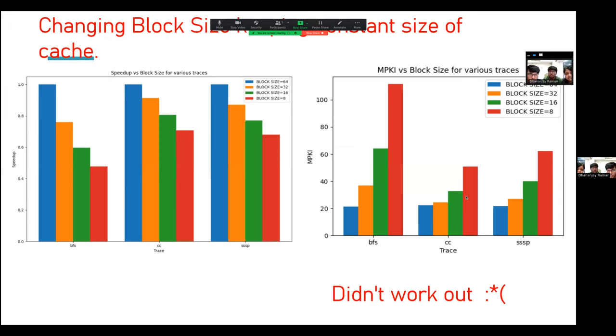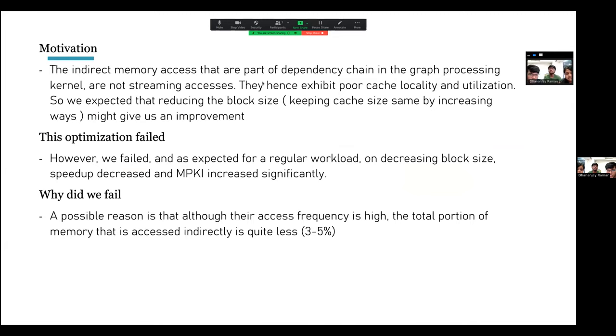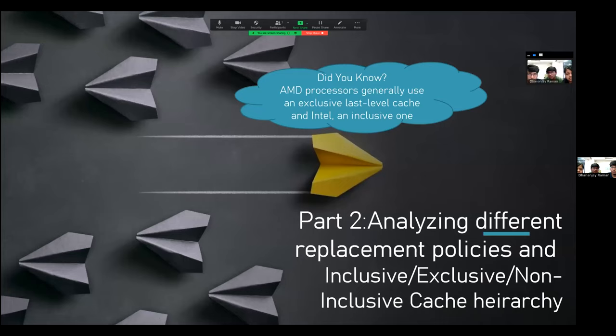Another thing that we tried was changing block size, keeping the cache size constant. Our main motivation was that indirect memory accesses that are part of dependency chains in graph processing kernel are not streaming accesses. They hence exhibit poor cache locality and utilization. So we expected that reducing the block size might give us an improvement. However, the optimization failed. As expected for regular workload, on decreasing block size, speedup decreased and MPKI increased significantly, as we can see here. But why did we fail? A possible reason is, although the access frequency is high, the total portion of memory that is accessed indirectly is quite less, 3 to 5%.